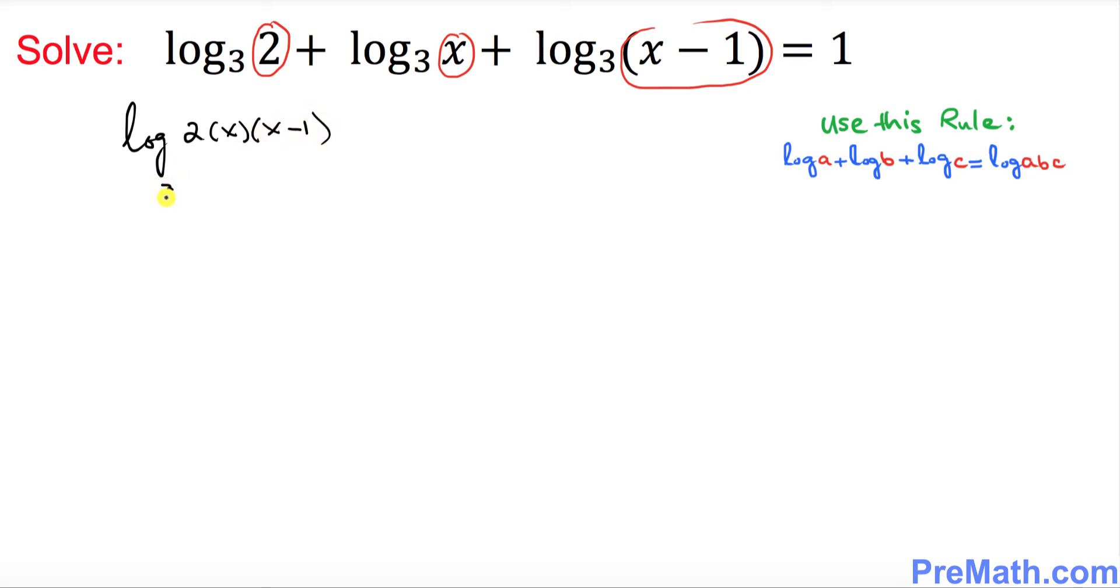Using this rule, I can write log of 2 times x times x minus 1 with the base 3 equals to 1. This is base 3, by the way.